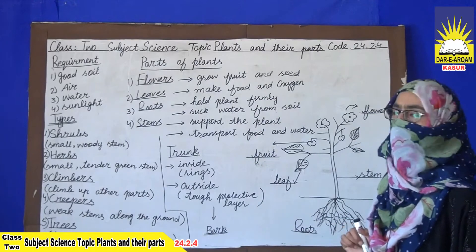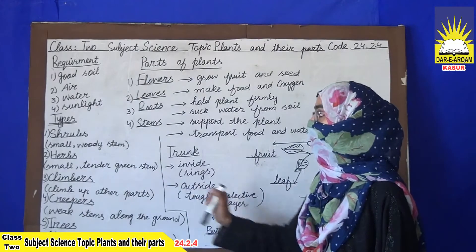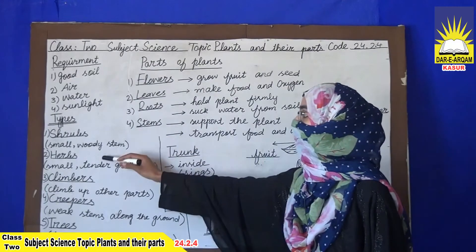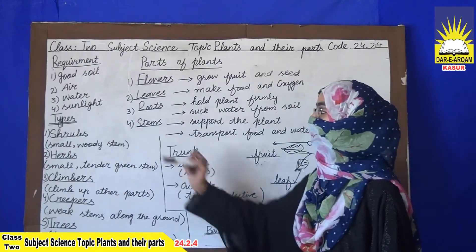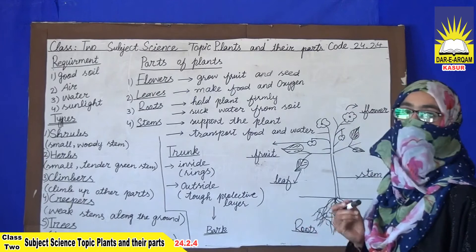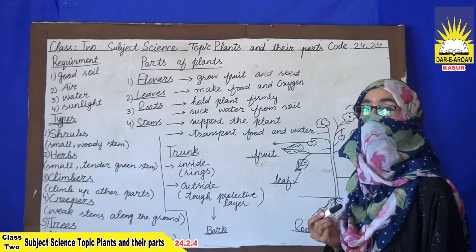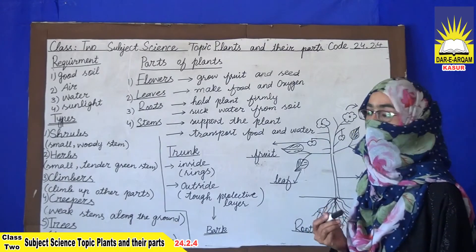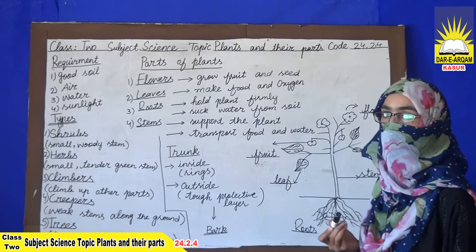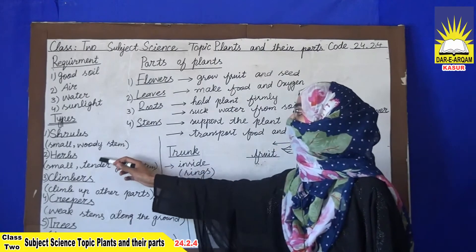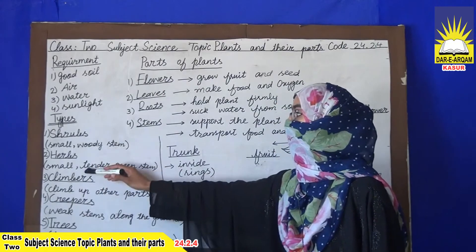Plants are of different shapes and sizes and have many types: shrubs, herbs, climbers, and creepers. Shrubs are small plants with a woody stem, but not as strong a stem as a tree — they have a woody but weak stem.